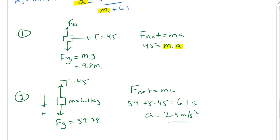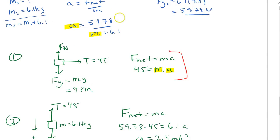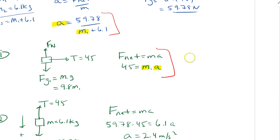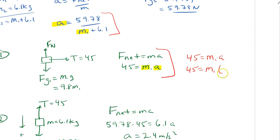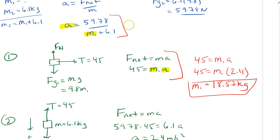Now with acceleration known, we go back and use object one's equation: 45 equals M1 times 2.4. Dividing both sides by 2.4 gives M1 equal to 18.57 kilograms. We could even do one more check by plugging A and M1 back in to verify.